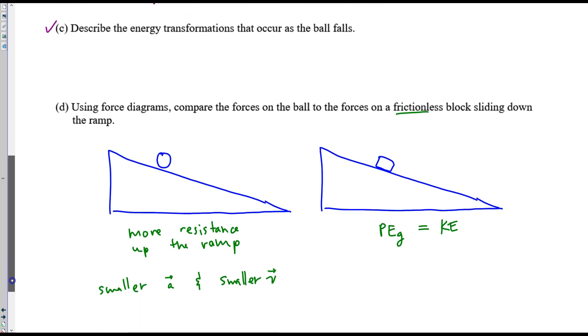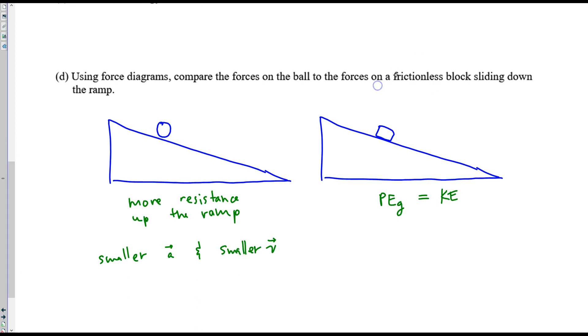That pretty well covers part c. However, there's something important to notice. If we were to compare the forces on a rolling sphere, or marble or something, and the forces on a frictionless block, there's actually more resistance in this case. And because you have more force pointing up the ramp, there is less acceleration, less speed, and at the bottom, you have less regular kinetic energy at the bottom.